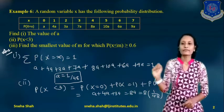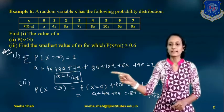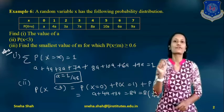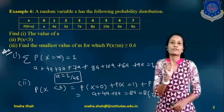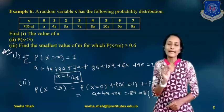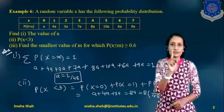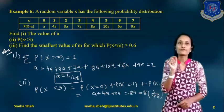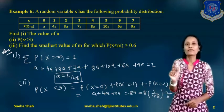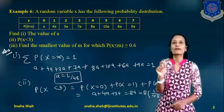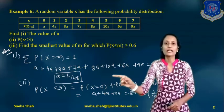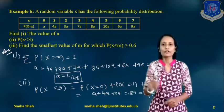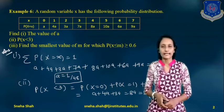Simplifying this, the total equals 48a. So 48a = 1, and therefore the value of a equals 1/48.